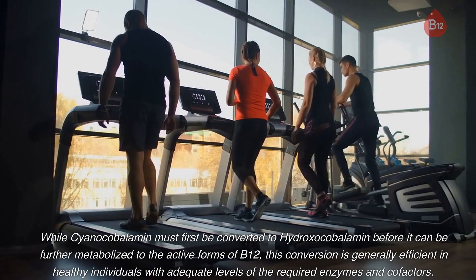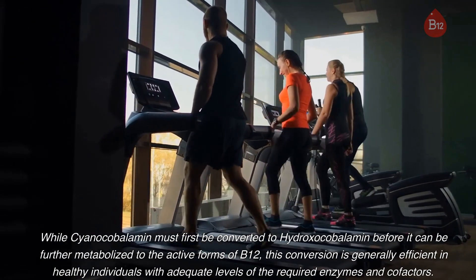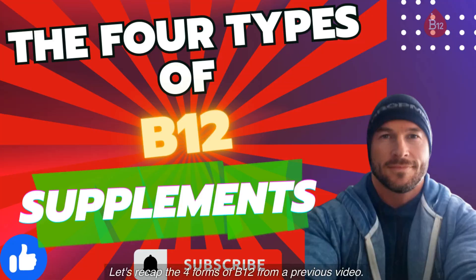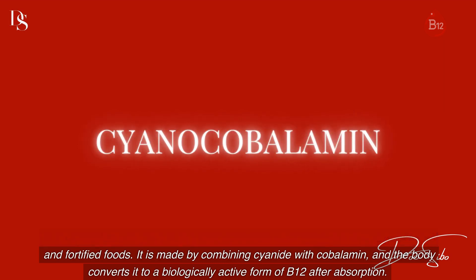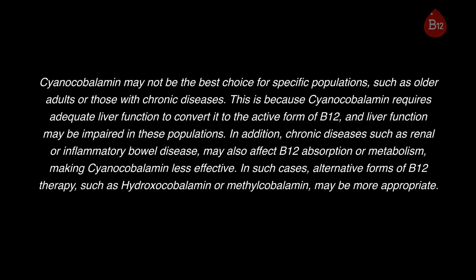While cyanocobalamin must first be converted to hydroxocobalamin before it can be further metabolized to the active forms of B12, this conversion is generally efficient in healthy individuals with adequate levels of the required enzymes and cofactors. Cyanocobalamin is the most commonly used form of B12 in supplements and fortified foods. It is made by combining cyanide with cobalamin, and the body converts it to a biologically active form after absorption. Cyanocobalamin may not be the best choice for specific populations, such as older adults or those with chronic diseases, because it requires adequate liver function to convert it to the active form, and liver function may be impaired in these populations.